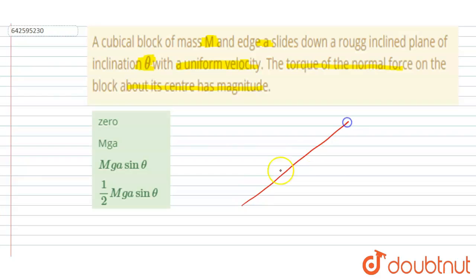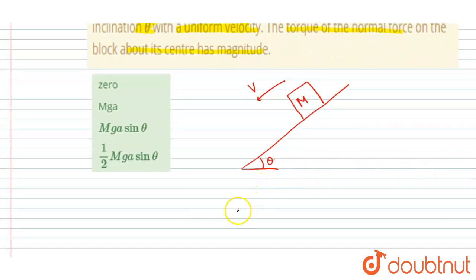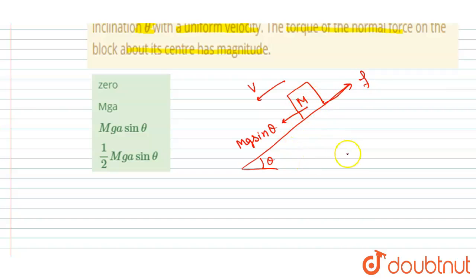Let's suppose this is the inclined plane and the inclination is theta. On this inclined plane, a block of mass m is placed and this block is sliding with uniform velocity. Since the block is sliding with uniform velocity, the acceleration of the block along the incline is zero, so the net force along the inclined plane should be zero. The component of mg along the inclined plane is mg sinθ, and the friction force is f, so mg sinθ equals the friction force.